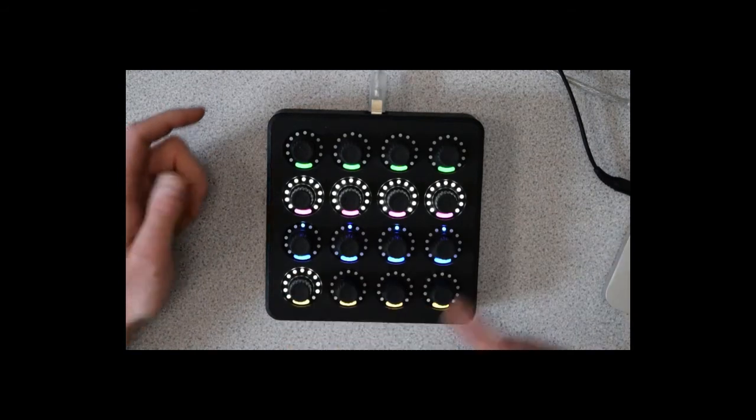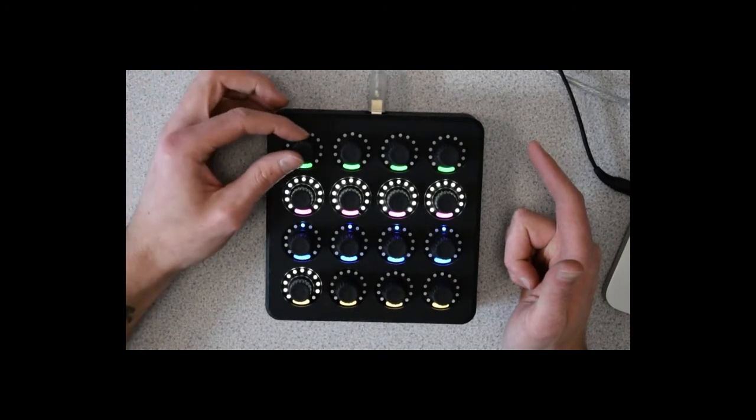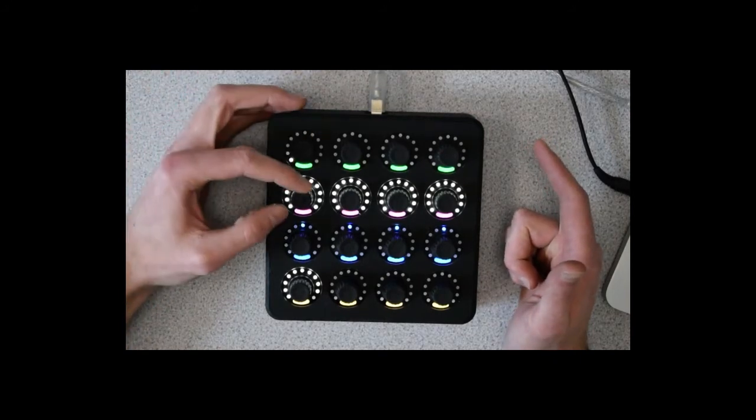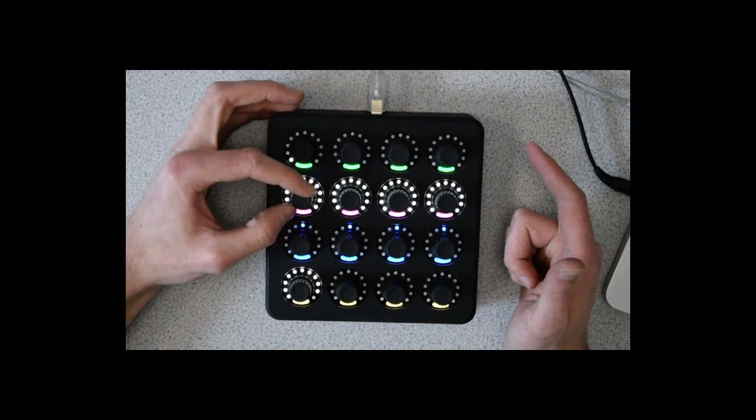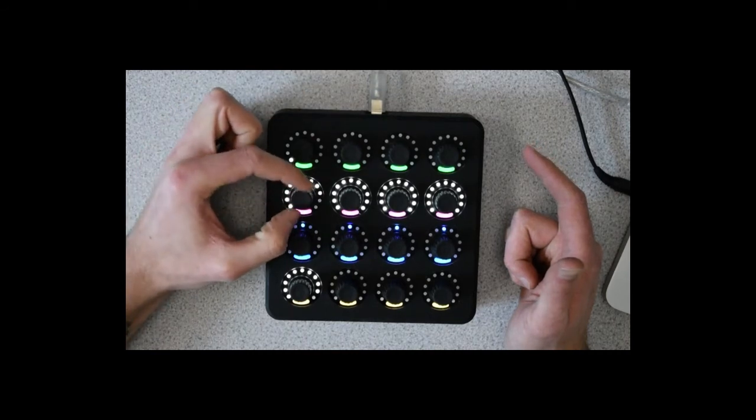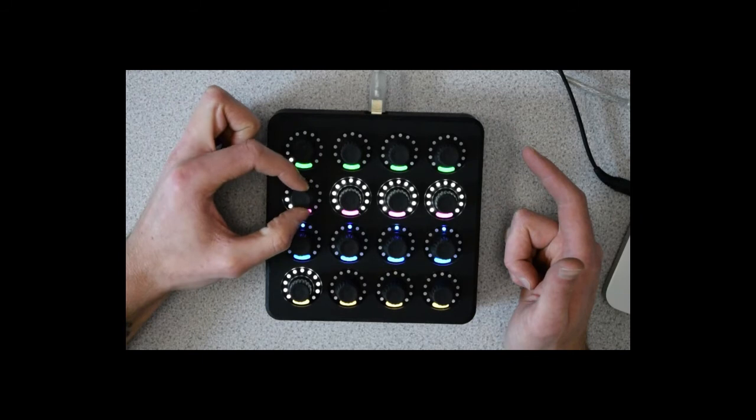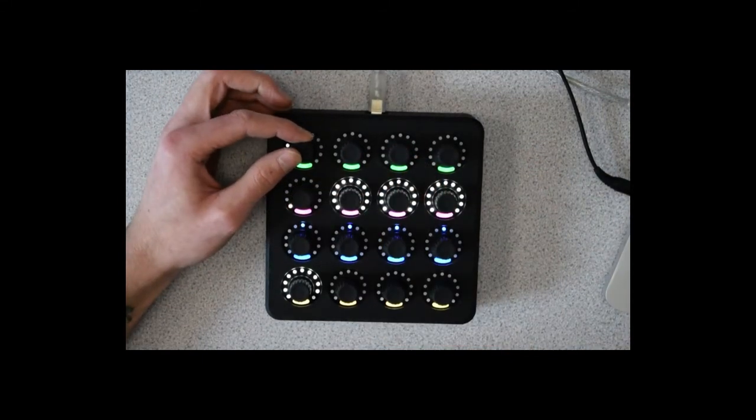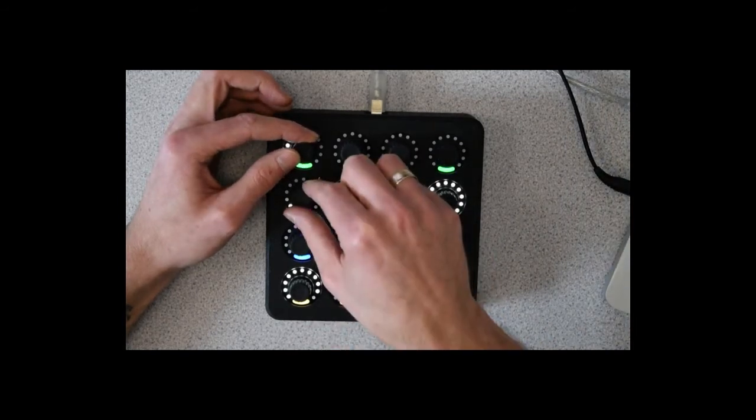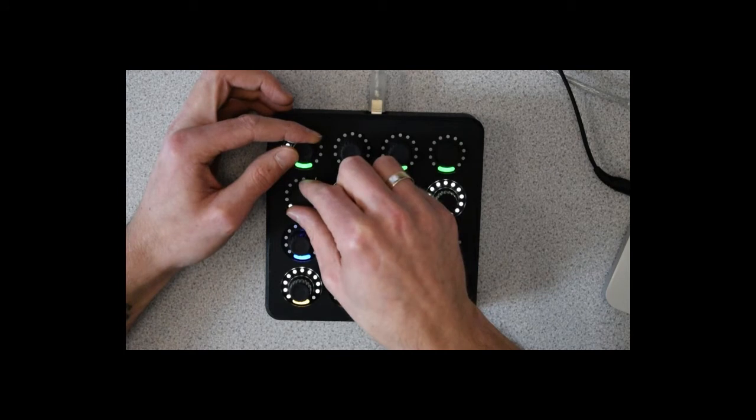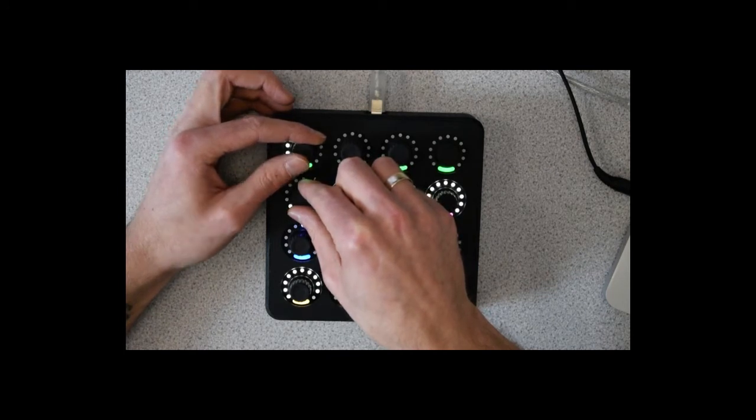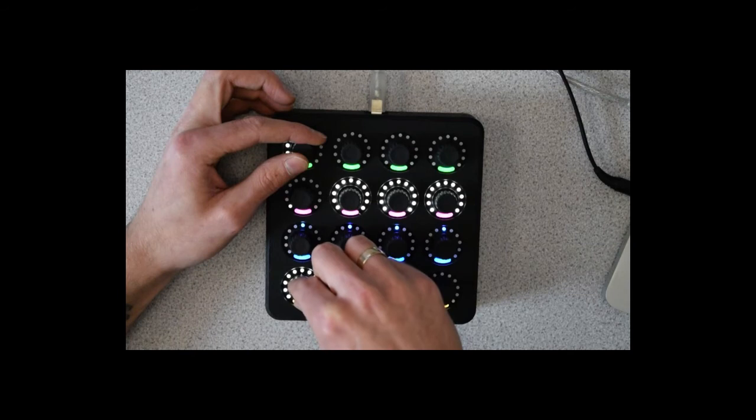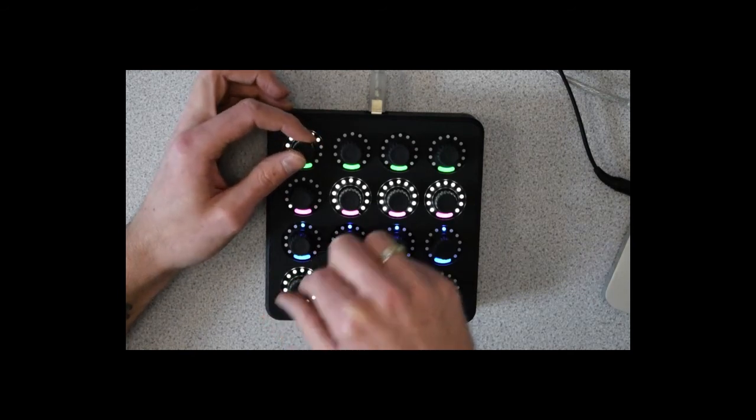So what we've got at the top, the top encoders, are the start point of the loop, and the second encoder down becomes the length of the loop. So if I dial this in a little bit tight, there we go. You can hear the granularization there. And I can make that quite short as well.